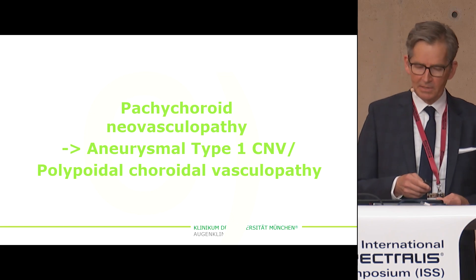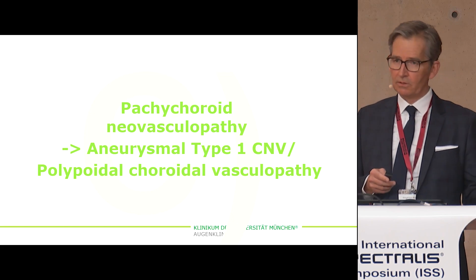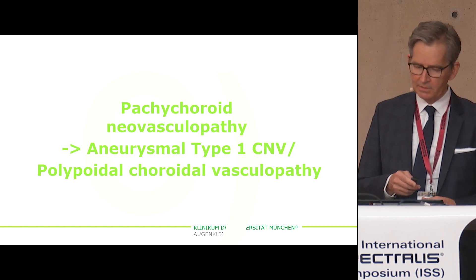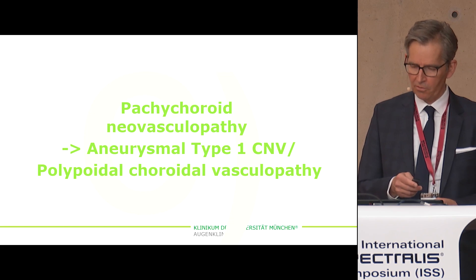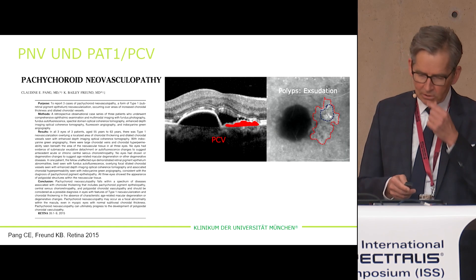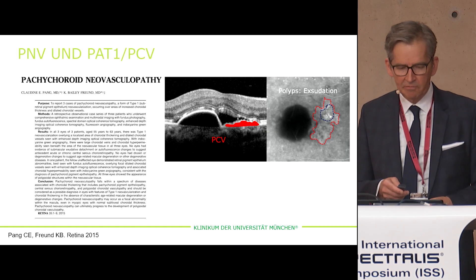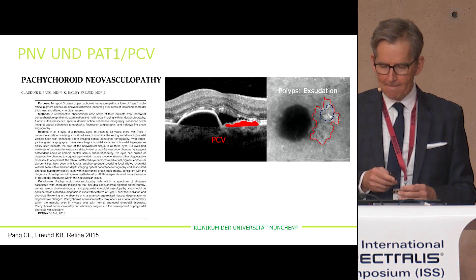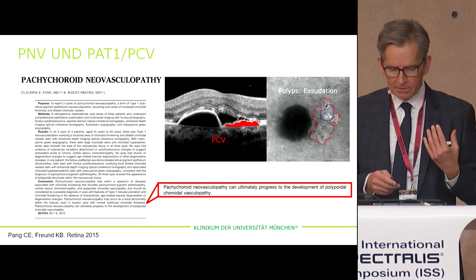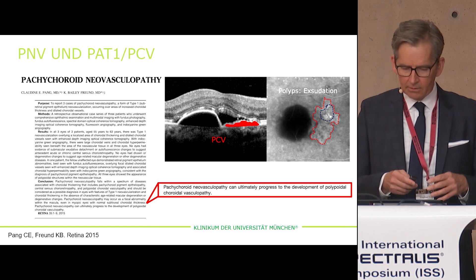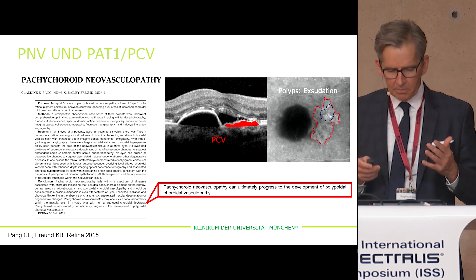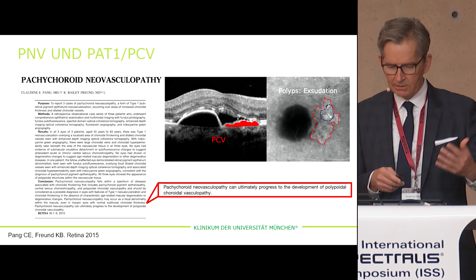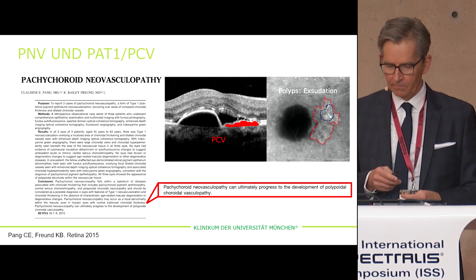Last step: PNV transition to aneurysm type 1 CNV or polypoid choroidal vasculopathy. Already in 2015, Peng and colleagues postulated that PNV can ultimately progress through the development of PCV.